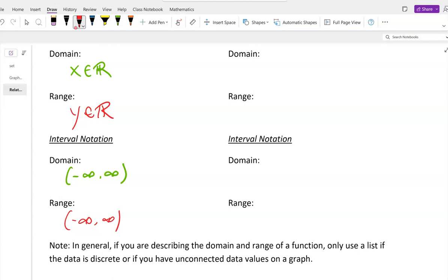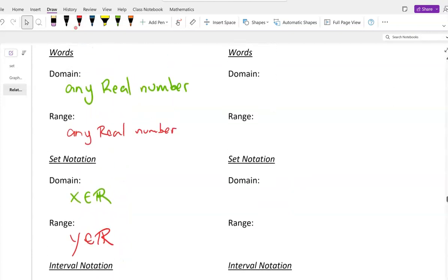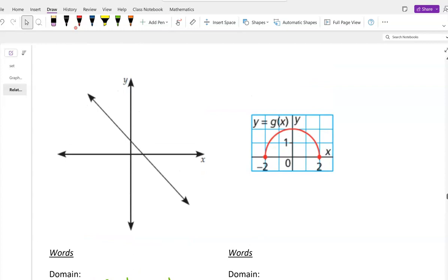Now, the good news about that, the domain and range are pretty easy for a line that goes on forever. That's going to be our whole next unit, linear relations. A line that goes on forever. So keep that in mind. If I ask you for domain and range, it should be free marks.